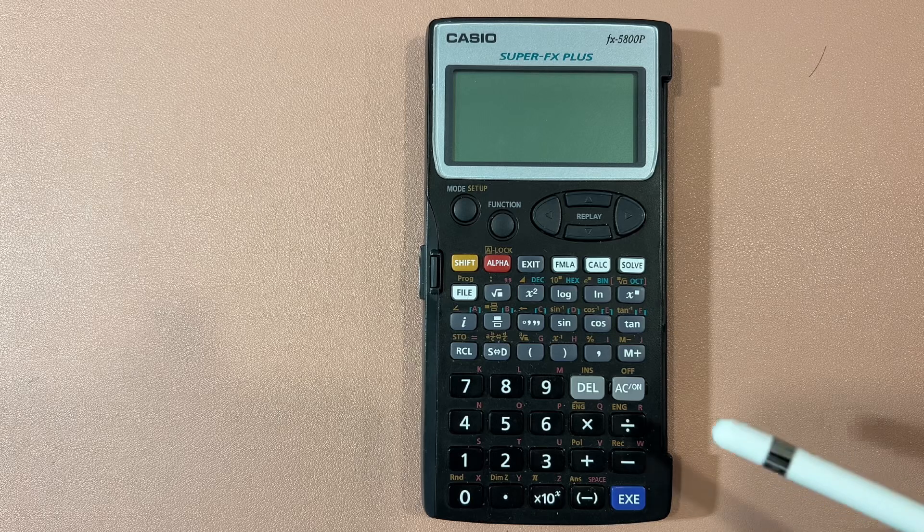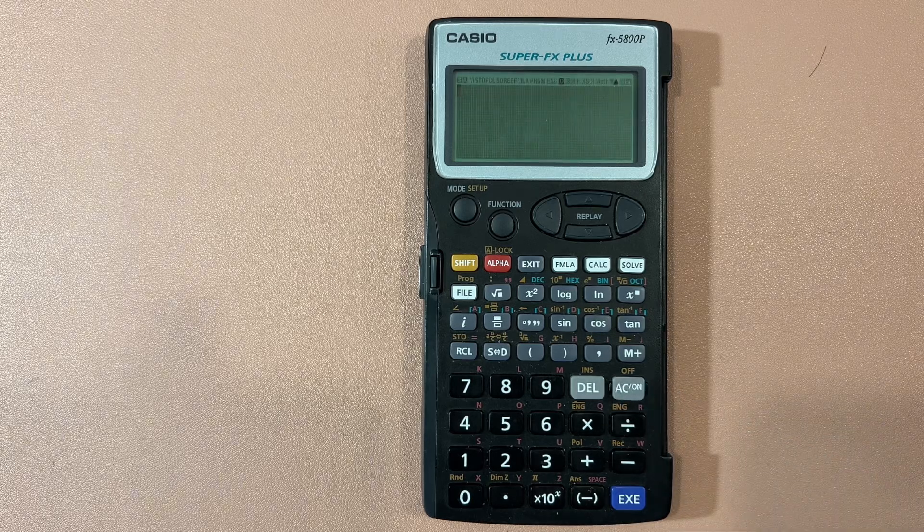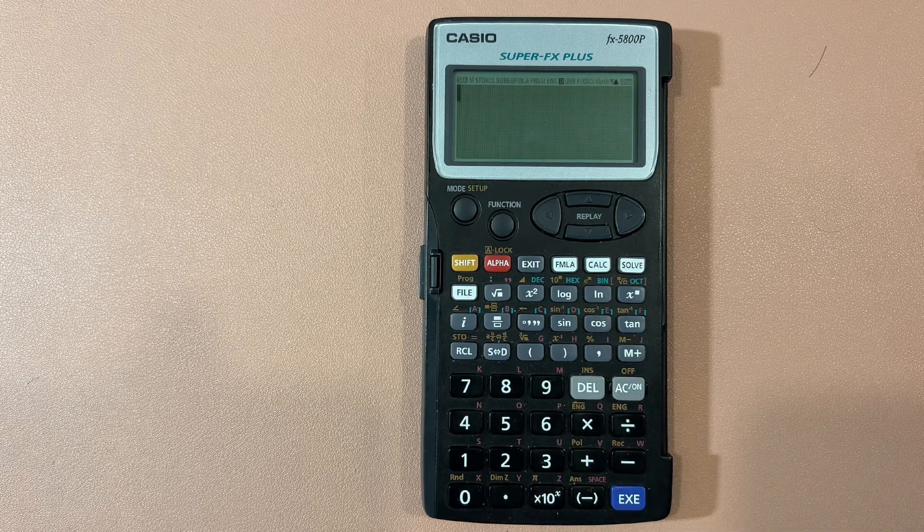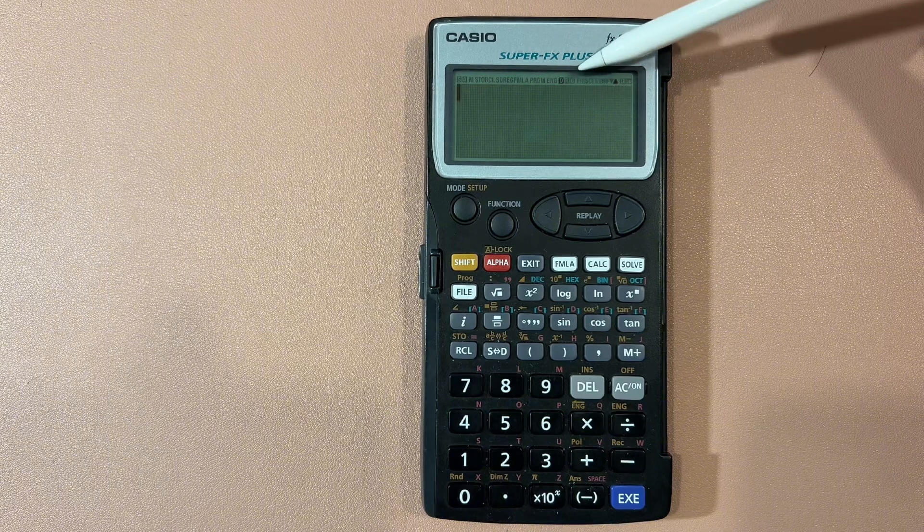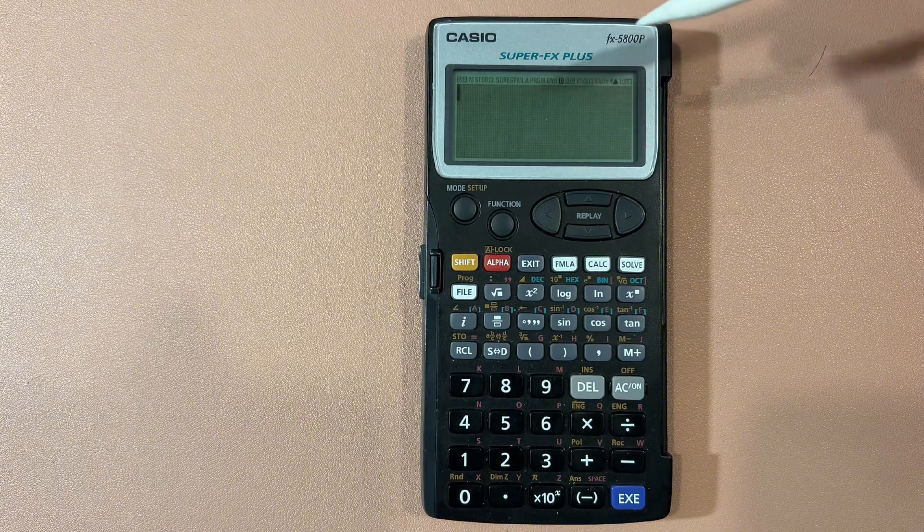We're going to start the calculator by pressing on the AC. And if we look at the top of the screen right now, we have a D in here, which shows that degrees mode is on now.